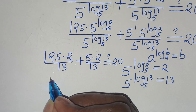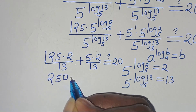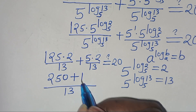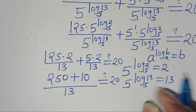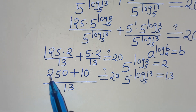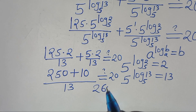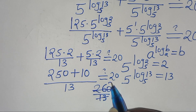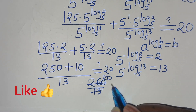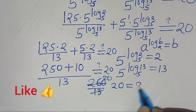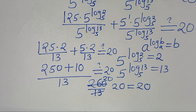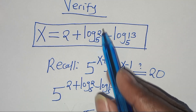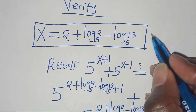Now 125 times 2 is 250, plus 5 times 2 which is 10, all over 13 as the LCD, giving us 260 divided by 13. Simplifying 260 by 13 gives 20. The left-hand side equals 20, which matches the right-hand side of 20. This confirms that x equals 2 + log₅2 − log₅13 satisfies the equation.